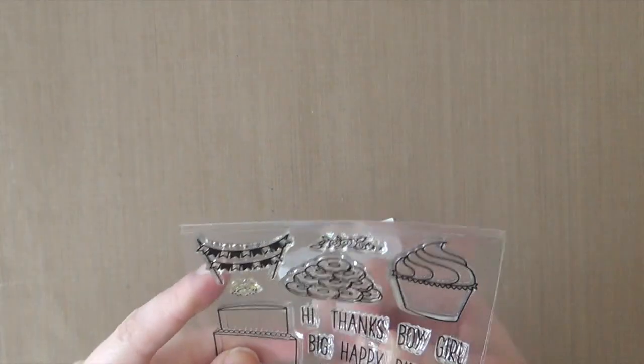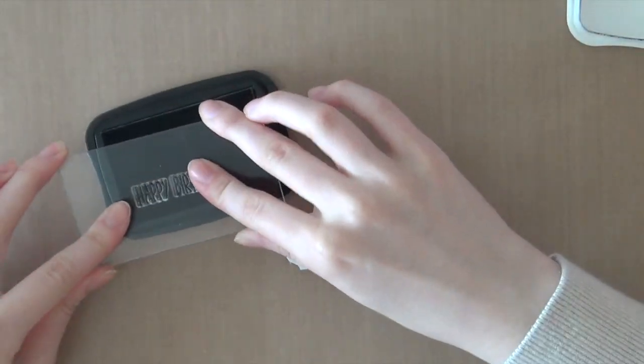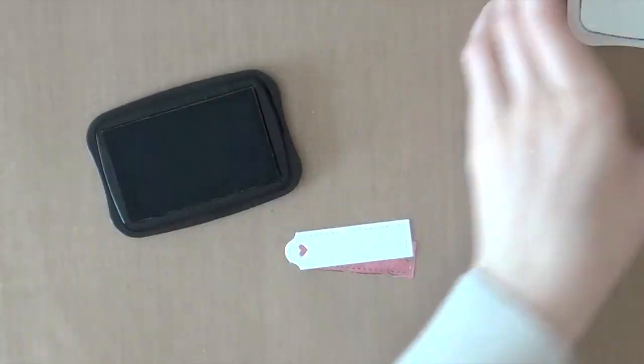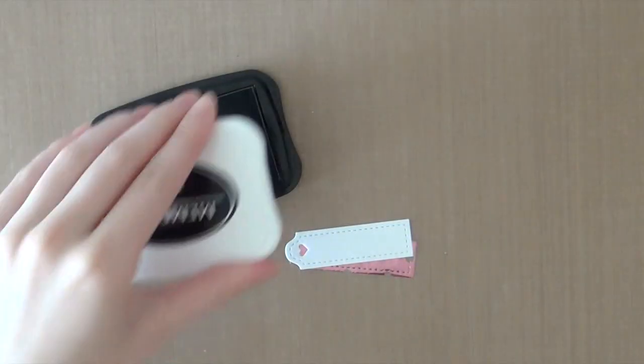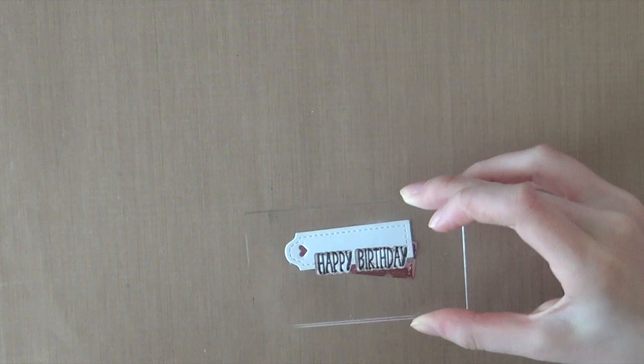And then next I'm going to stamp a sentiment using the Sugar Rush stamp set from Winnie & Walter. I think that this stamp set matches the donut perfectly. I'm piecing together a happy birthday greeting and I'm going to stamp that onto the label using Memento Tuxedo Black Ink.